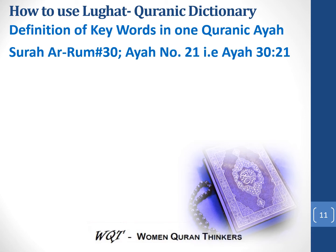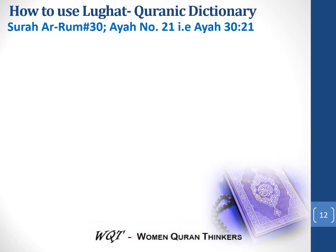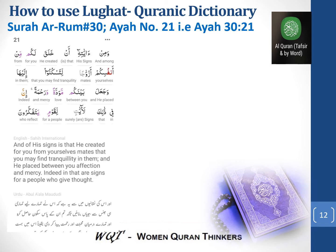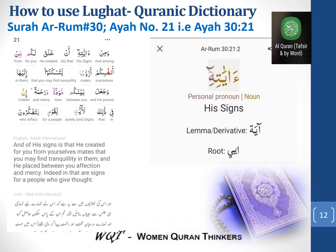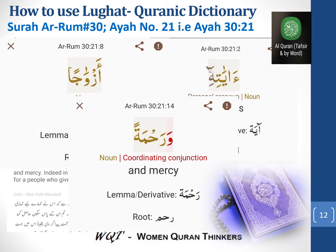We are going to pick up one ayah: Surah Al-Room, chapter 30, ayah number 21. In this ayah we have selected three keywords: ayatihi, zawja, and rahma. We go into the smartphone app to identify the root words. Clicking on ayatihi gives the root word alif-ye-ye. Clicking on zawja gives the root word zawj. And clicking on rahma gives the root word rahm.